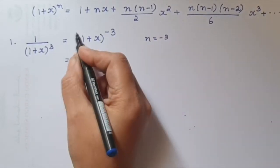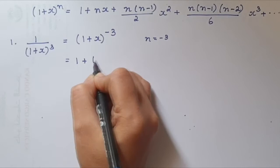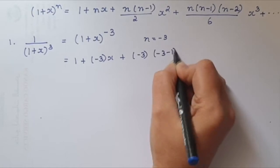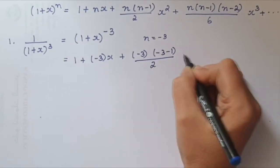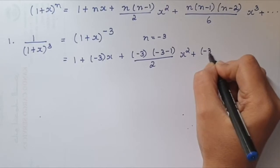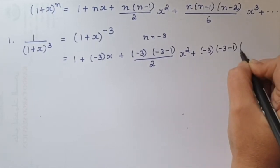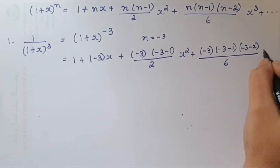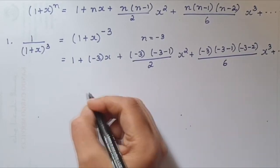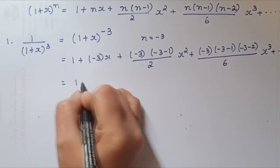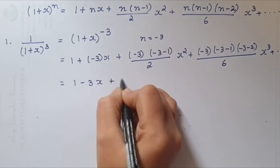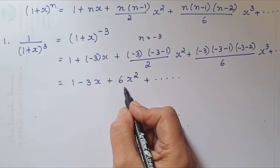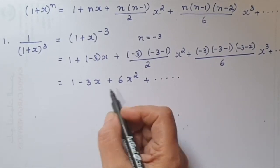Substituting n = −3 wherever there is an n: 1 + (−3)x + (−3)(−3−1)/2 · x² + (−3)(−3−1)(−3−2)/6 · x³. When you simplify this you get 1 − 3x + 6x² − ... Only three terms are asked for, so we have written only the first three terms.